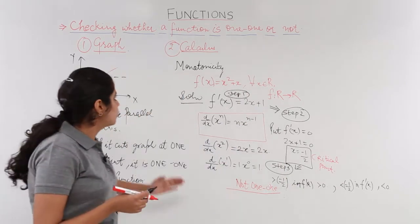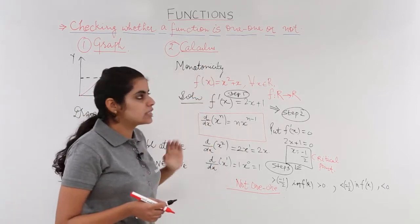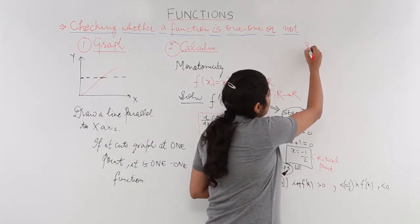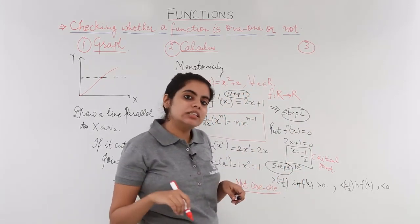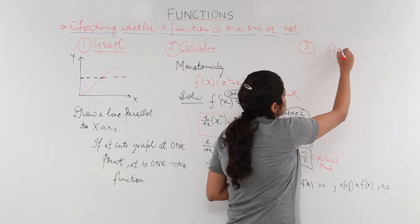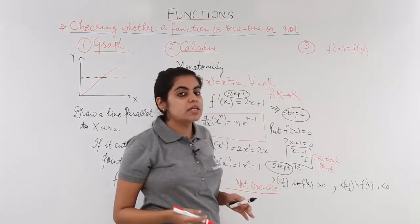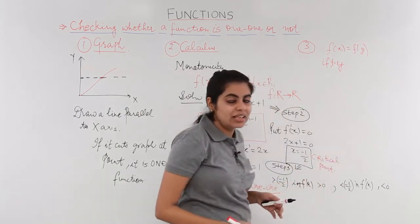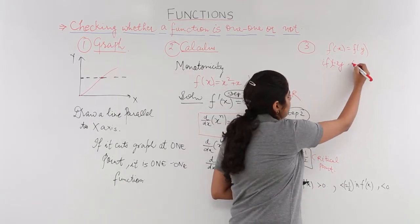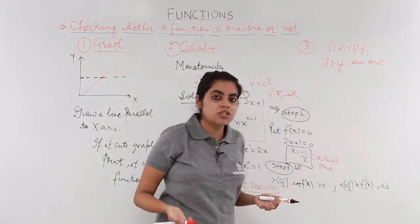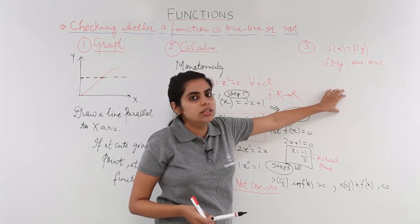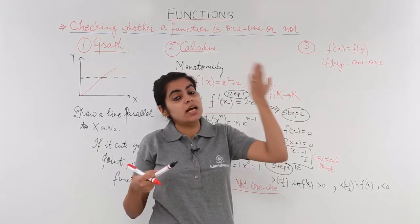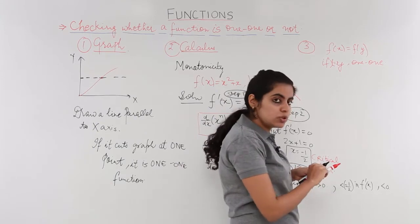After the two categories of graph and monotonicity, we have the third category to check whether a function is one-one or not. That third method uses the definition: suppose f(x) = f(y) — if we get x = y as a result, we have a one-one function. This was the definition of a one-one function: if the images are the same, then the elements must have been the same.